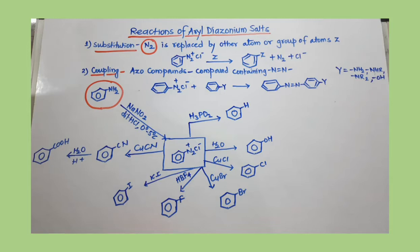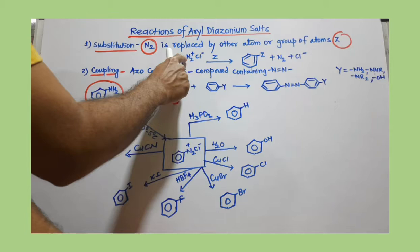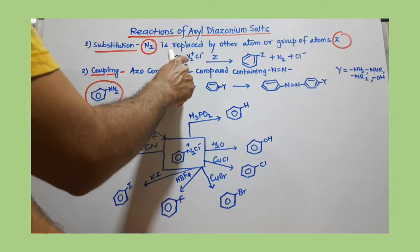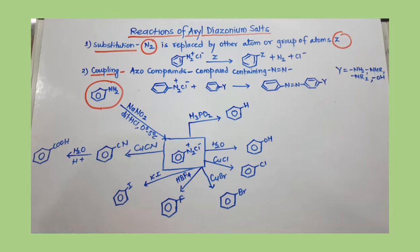In the substitution reaction, the N₂ of the aryl diazonium salt is replaced with another functional group — let's call it X. So using an appropriate reagent, X becomes attached to the benzene ring, and nitrogen gas is evolved along with Cl⁻. This is the substitution reaction.